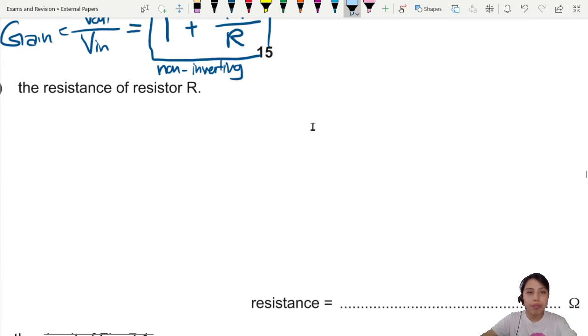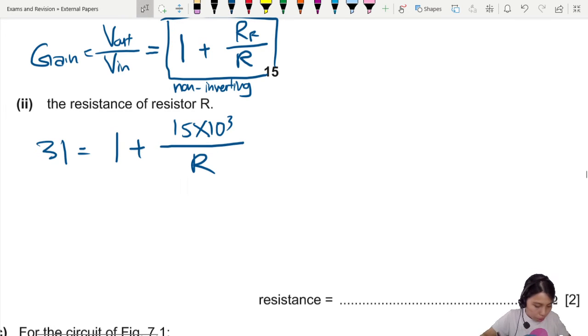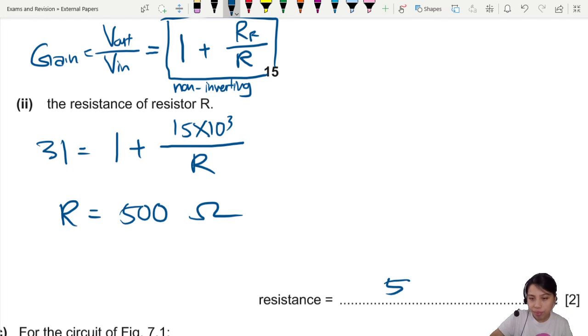Okay, so R_f is going to be this one, 15 kilo ohms. Let's sub in all the values in there. So now we know our gain is 31. So we just write, 31 equals to 1 plus, this is 15 kilo ohm over R. Press your calculator correctly. You should get about 500 ohm as your resistance. Two marks for this. So this one, first mark is from your equation. Did you know how to plug into this one or not? Please memorize, okay? Please memorize this one.